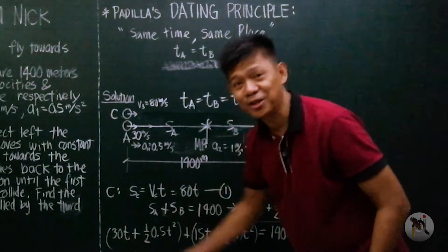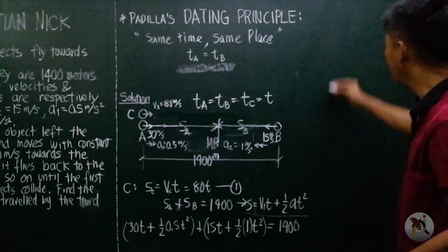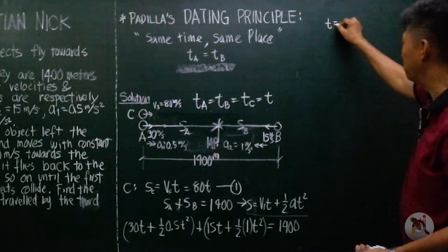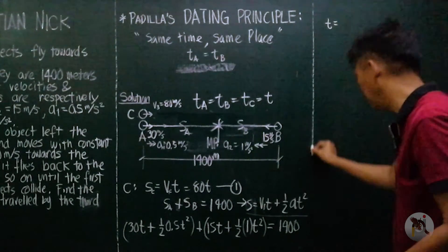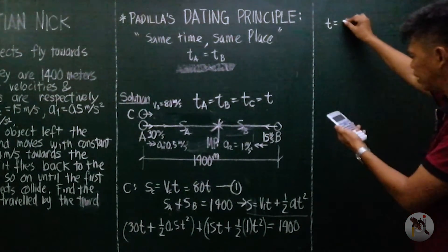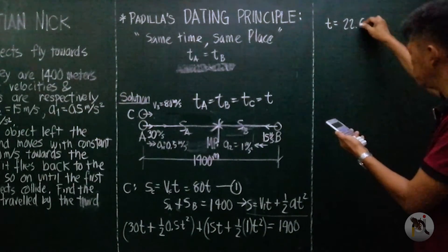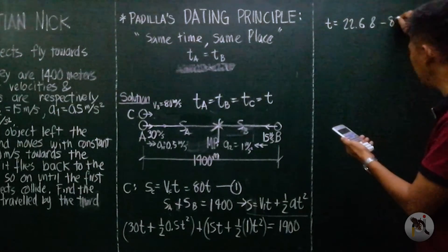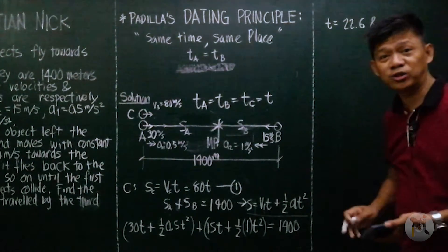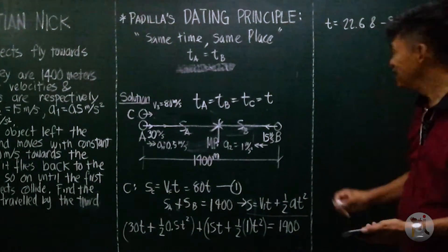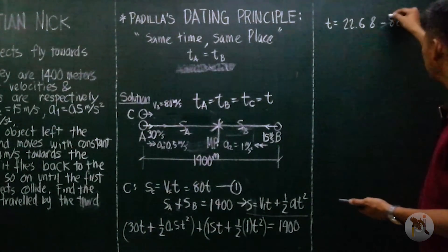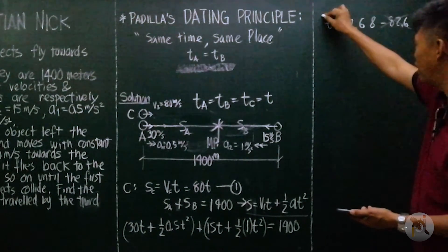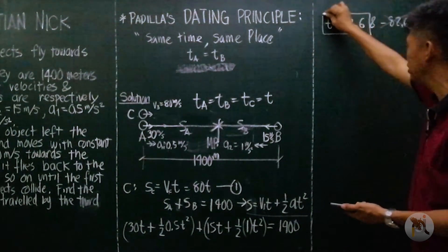One equation in terms of T will be able to solve time. And time is equal to? So you have here 22.6 and negative 82.6. I solved it using quadratic equation, but time cannot be negative, so this is neglected. So our time is 22.6 seconds.